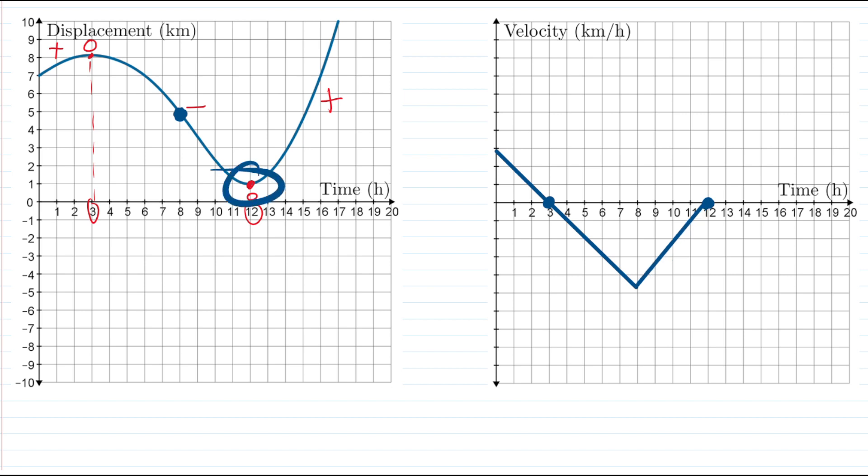And then what happens after that point, well, the slopes become positive and notice they become more and more positive. Here, the graph is not increasing as quickly as it is here. So our values for velocity, which are the values for slope here, should get higher and higher and higher as we go over because this graph here is getting steeper and steeper and steeper.